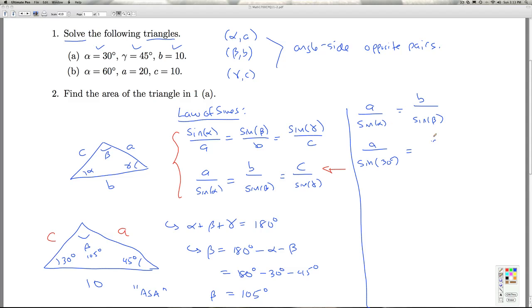So I can quickly get A to be 10 sine of 30 degrees over sine of 105 degrees. All right, and we'll come back and simplify this in a minute.